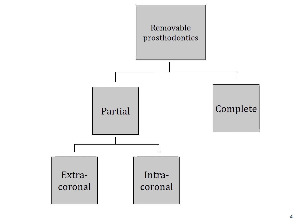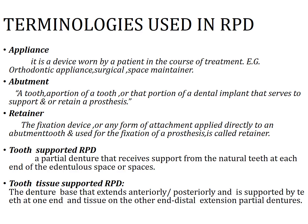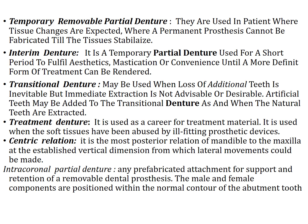Removable prostheses may be partial and complete. We have already covered complete dentures in the last class. In partial dentures, depending upon the way they achieve retention, they are further classified into extracoronal and intracoronal retained cast partial dentures. These are some terminologies you might encounter: the abutment, the retainer, tooth-supported RPD, tissue-supported RPD, temporary partial denture, interim partial denture, transitional denture, and treatment denture.